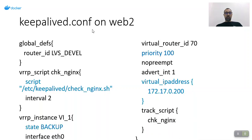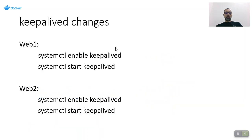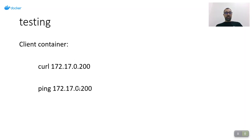For the second container web2, the configuration is exactly the same except the state is BACKUP, priority is less than web1's 200, the virtual_router_id is the same, and the same virtual IP address 172.17.0.200 is used. I then enabled keepalived and started the service in both containers.